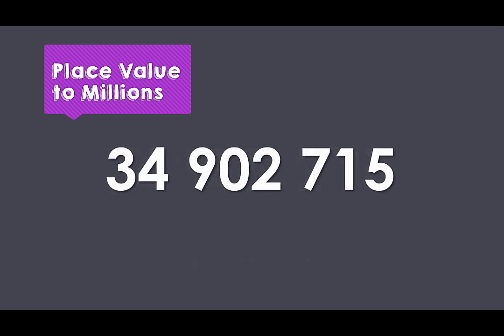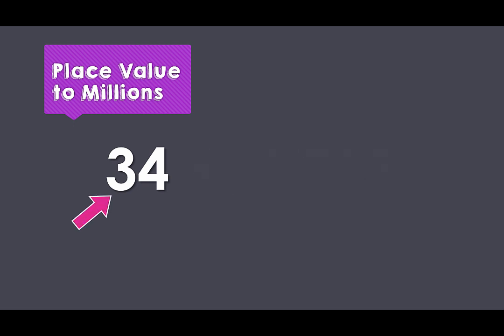How would you say this number? First, let's examine the digits before the first space. If we ignore the rest of the number, we can see that we have the number thirty-four. But really, we have thirty-four million.